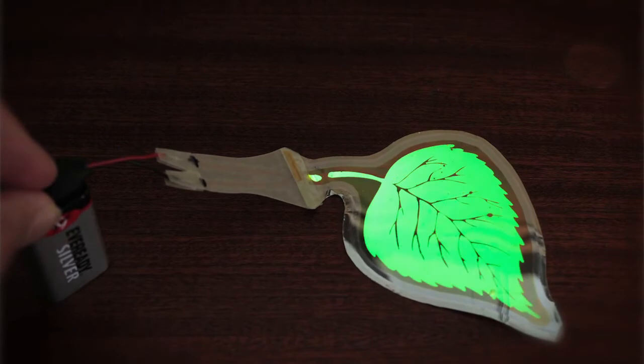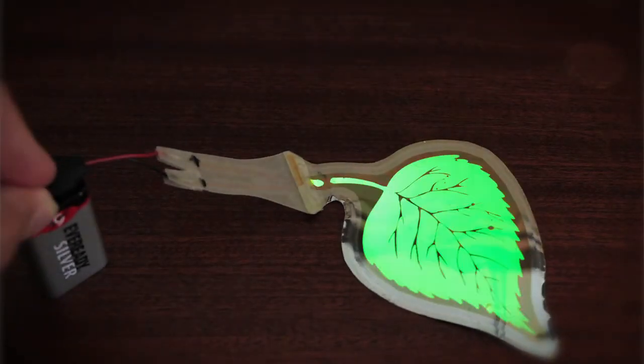An OLED is a very thin layer of an organic material. You apply a voltage over the layer and you get some light getting out.